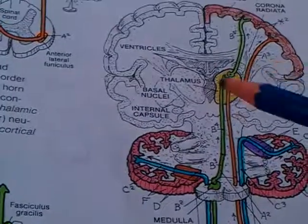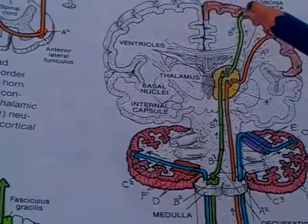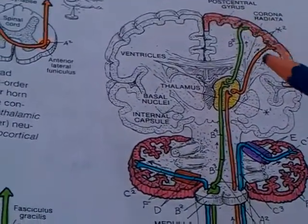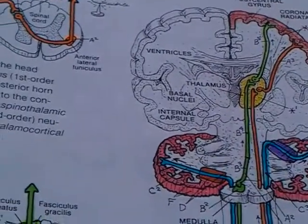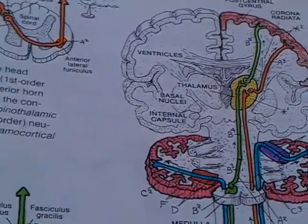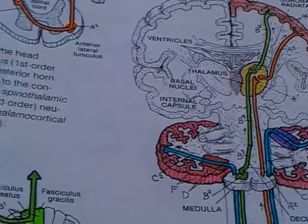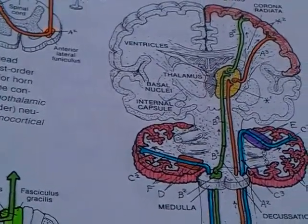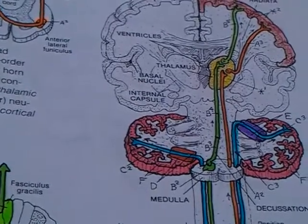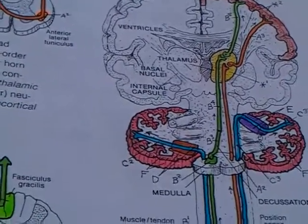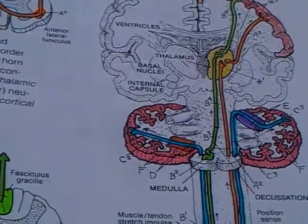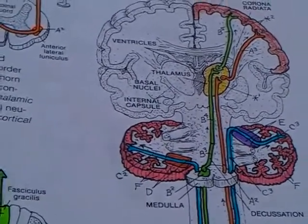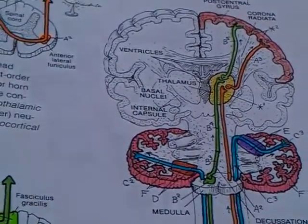There is also a thalamocortical tract to the postcentral gyrus. The medial lemniscus is a tract of epicritical sensibility, which establishes the fine feeling of all qualities of sensation — touch, thermal, and pain — and includes proprioceptive sensibility arising in the locomotor apparatus.